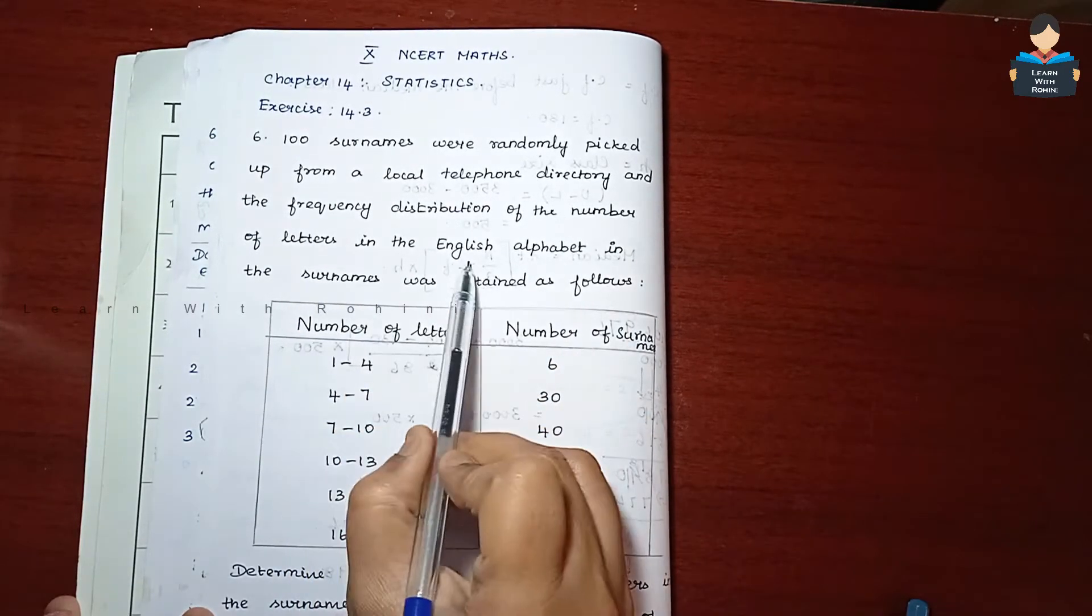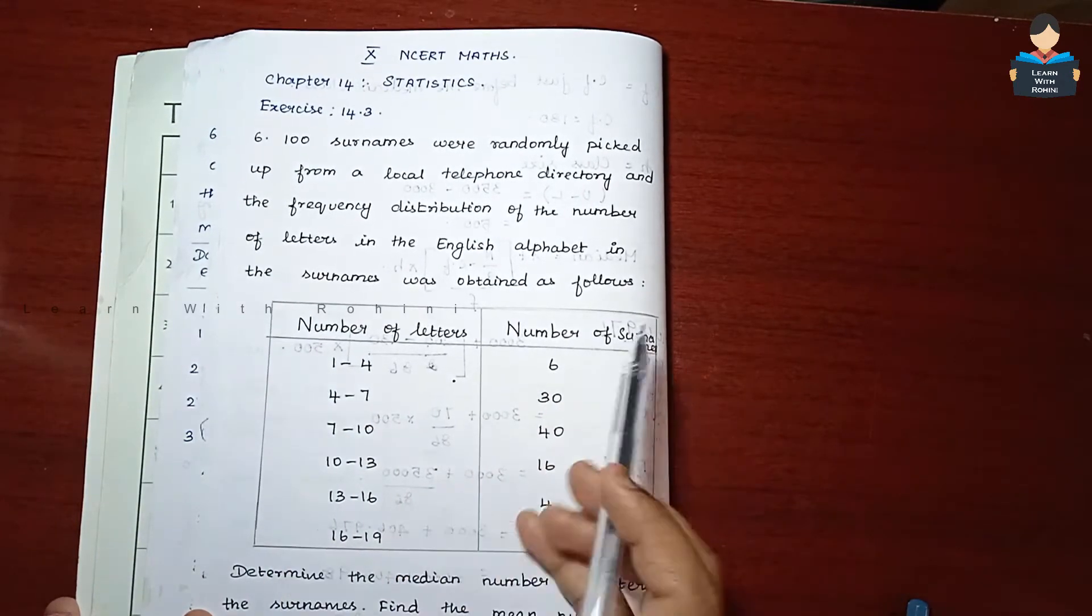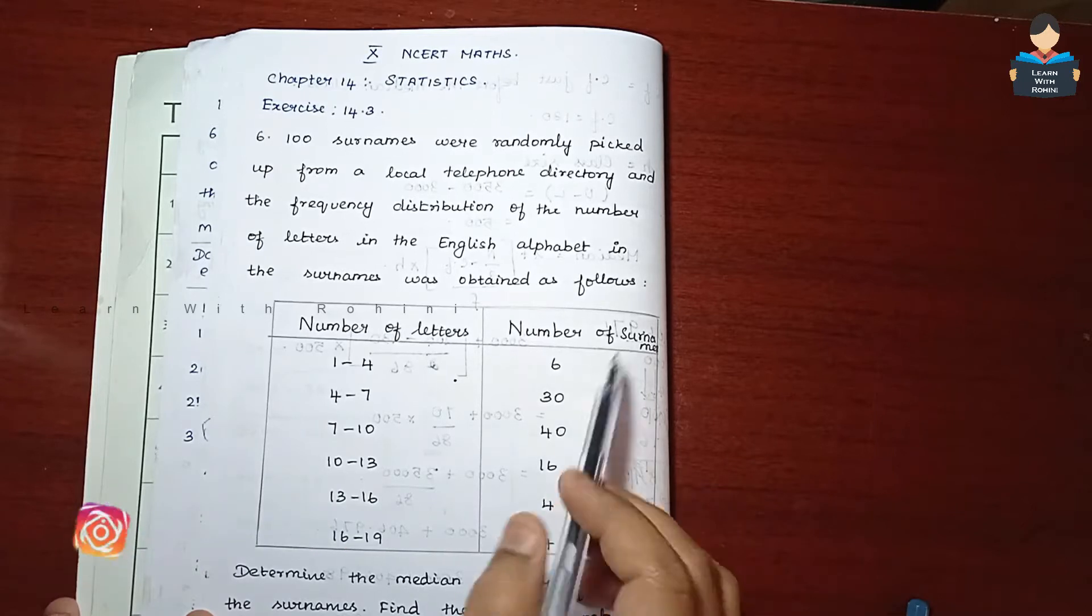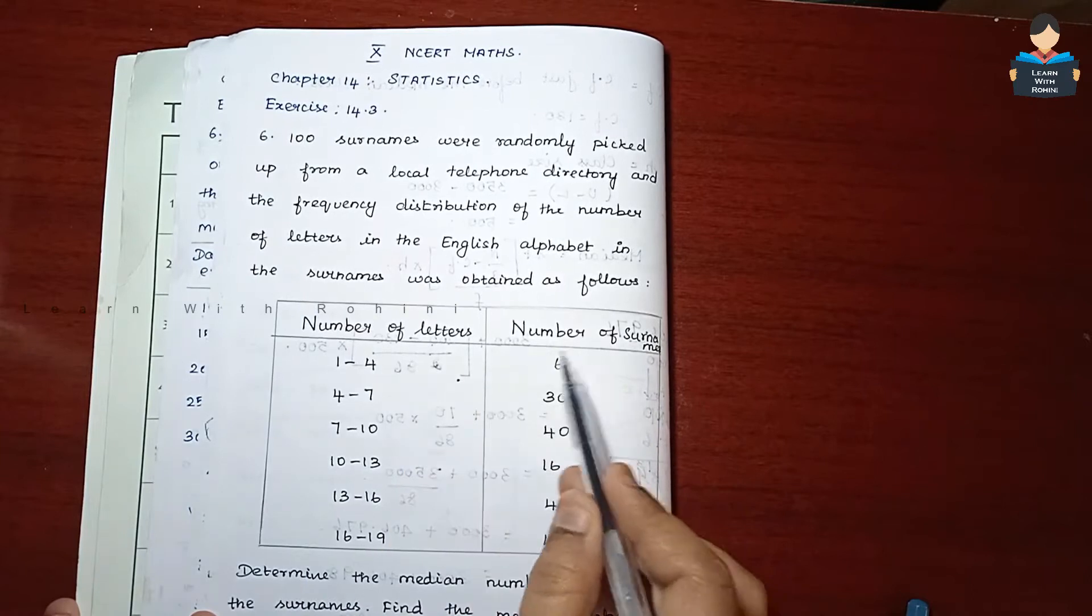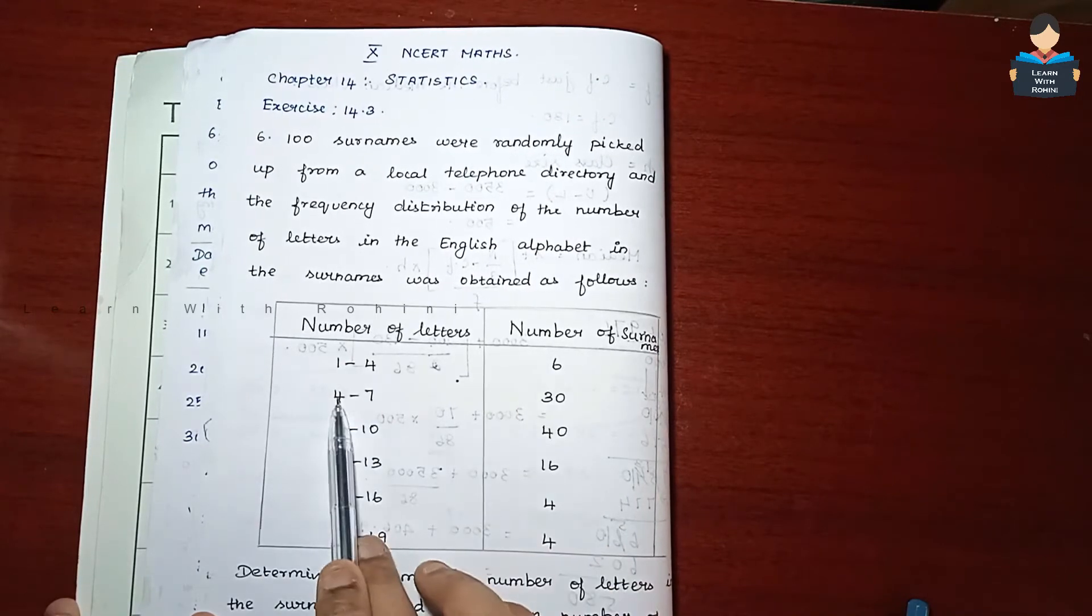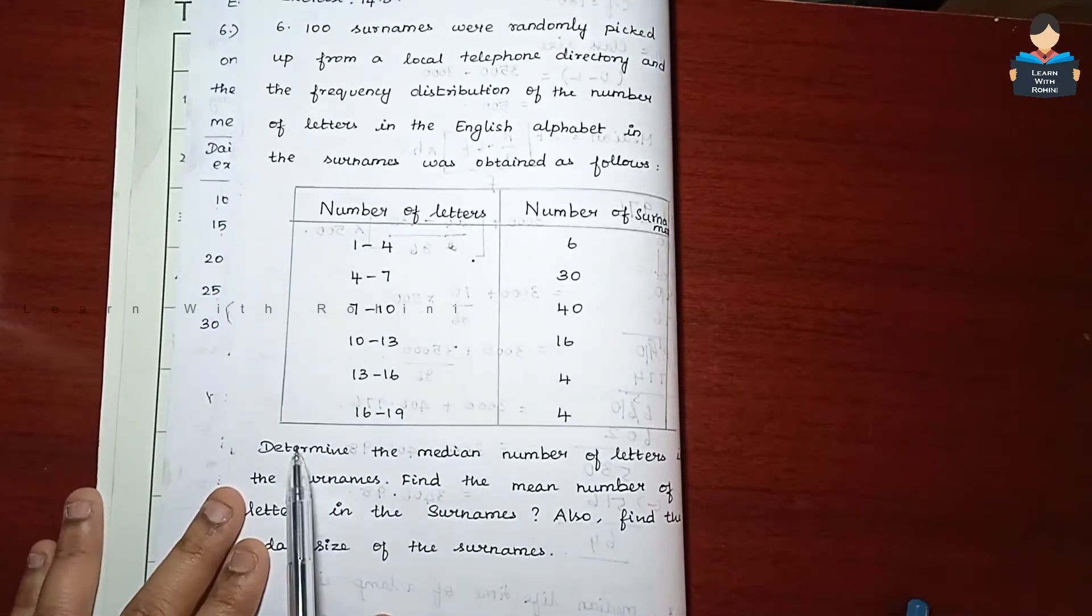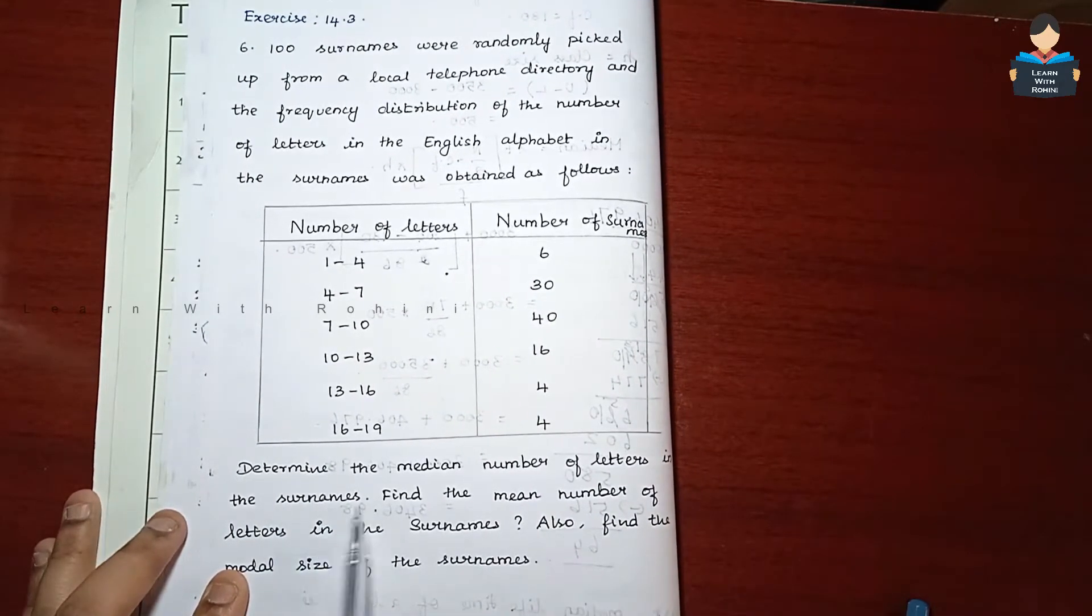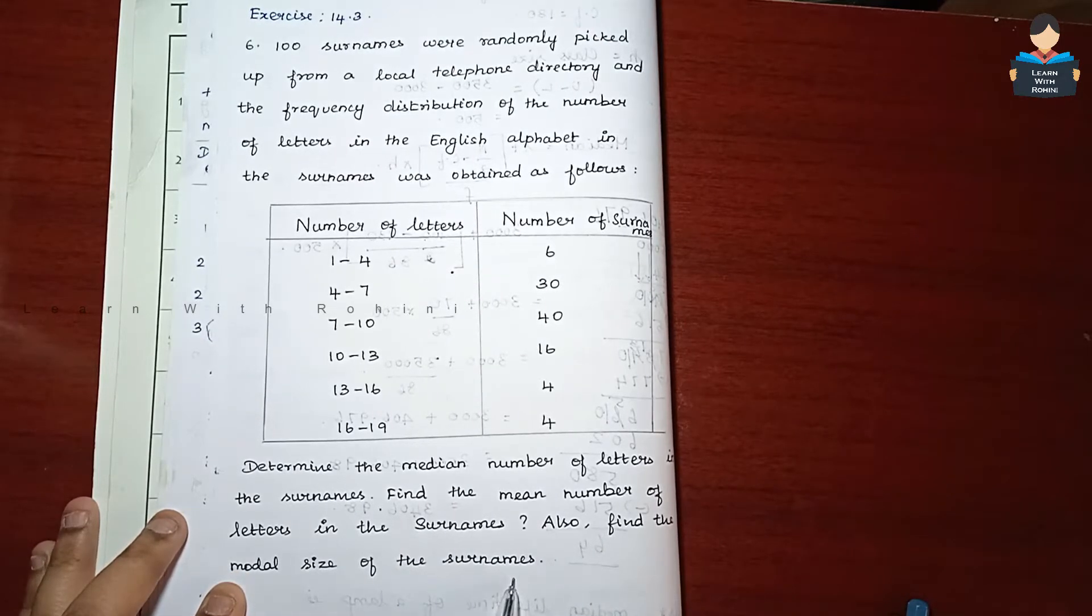In the English alphabet, the surnames were obtained as follows. One hundred names were randomly picked from the telephone directory and the names were analyzed by counting the letters and the frequency of the number of letters in the surnames.